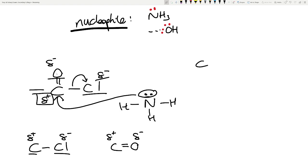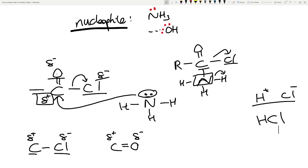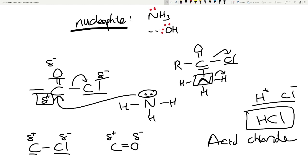Essentially what happens is the carbon kicks out the chlorine, and bonds to the nitrogen with its hydrogens. But now the nitrogen is bonding four times — so nitrogen kicks out one of the hydrogens. You then have a chlorine and a hydrogen left over — they bond together and you've produced hydrochloric acid. This is where the name 'acid chloride' comes from, because it always produces HCl as a byproduct.